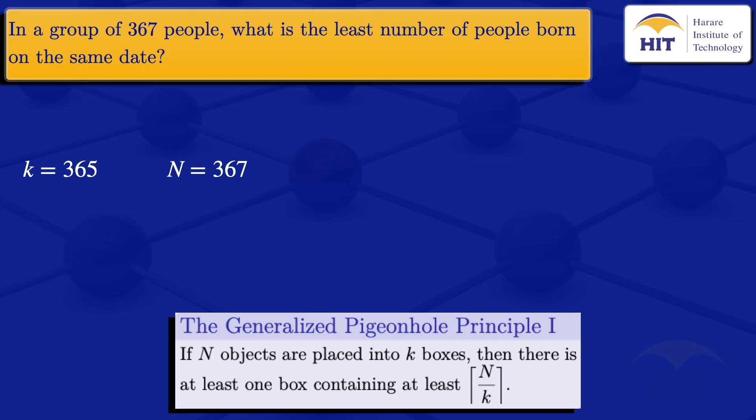So in this case we have n people, that's the 367. The categories which are the boxes, we are categorizing them according to the dates. And we want the least number of people born on the same date.